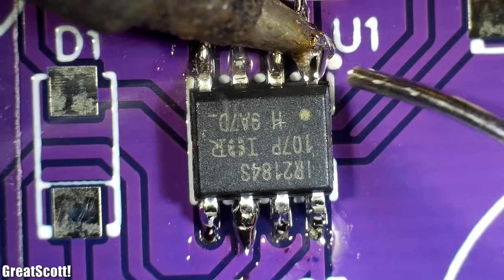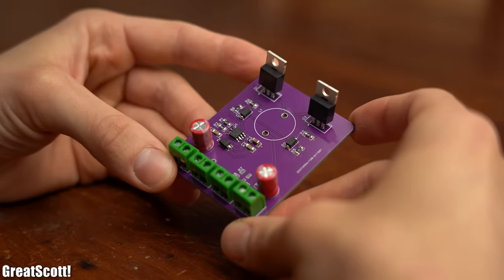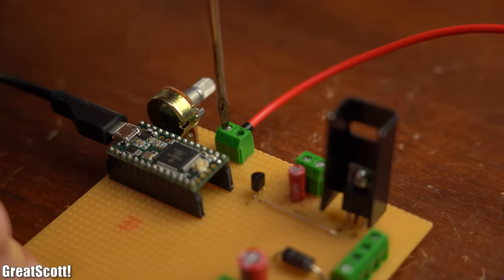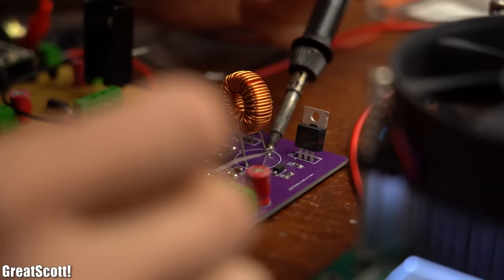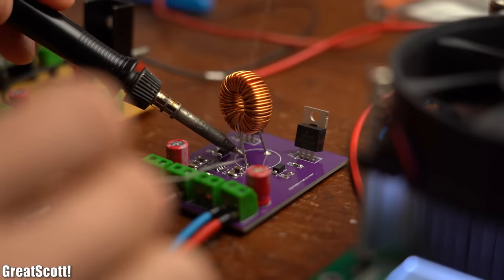And after one hour of SMD and THT soldering, the circuit was almost done. So I connected the PWM signal generated by the Teensy to the PCB and was about to solder in the previously used inductor when I realized that we might have a problem.